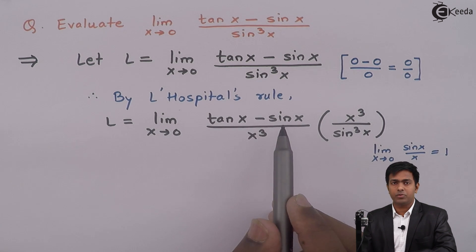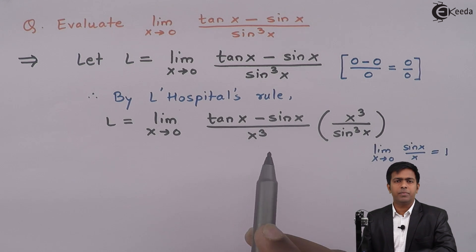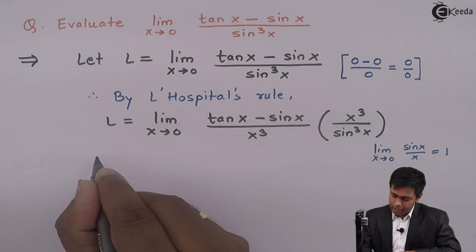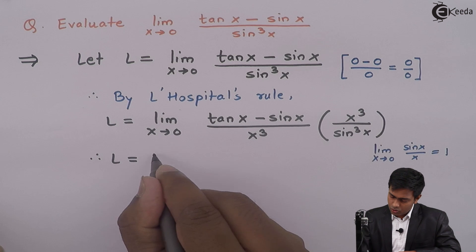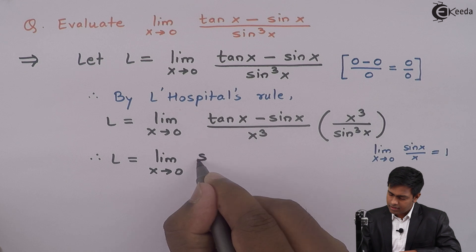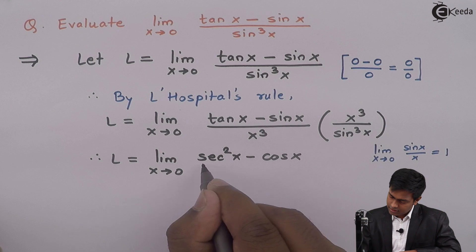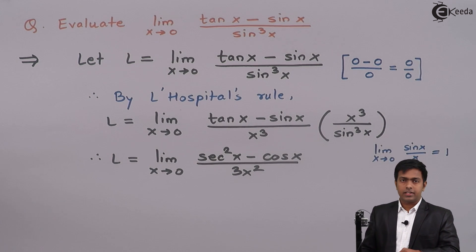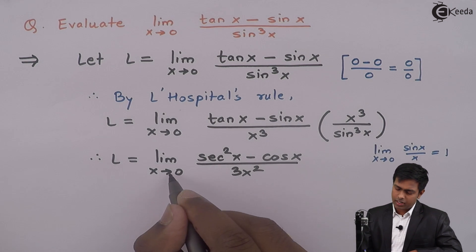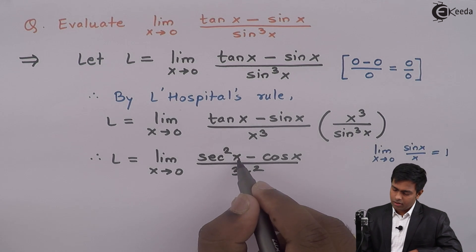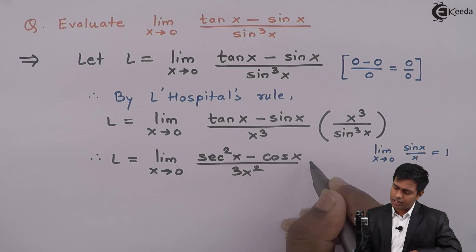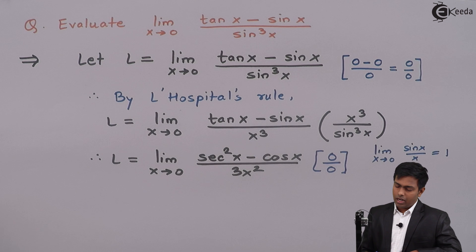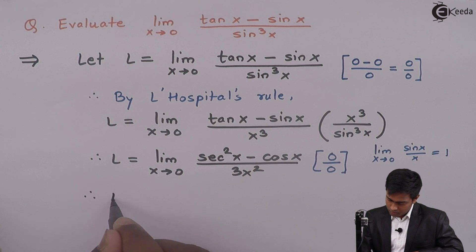Now in the denominator we have the algebraic function x cube, making derivatives much easier. So applying L'Hôpital's rule: the derivative of tan x is sec square x, minus the derivative of sin x which is cos x, upon the derivative of x cube which is 3x square. Substituting x as 0: sec 0 is 1 and cos 0 is 1, giving 1 minus 1 equals 0 in the numerator, and 3 times 0 square equals 0 in the denominator. We are still getting 0 upon 0, so we apply L'Hôpital's rule again.